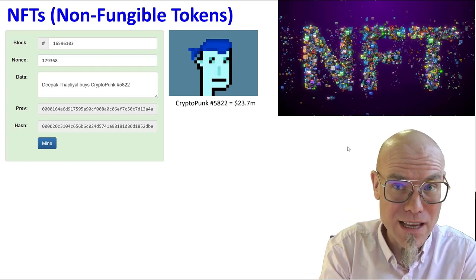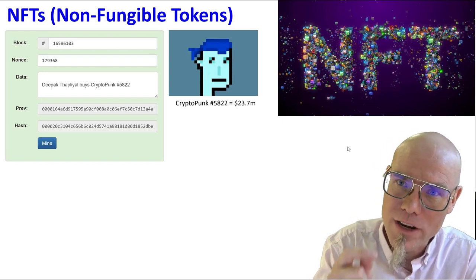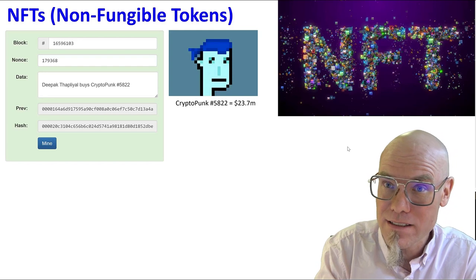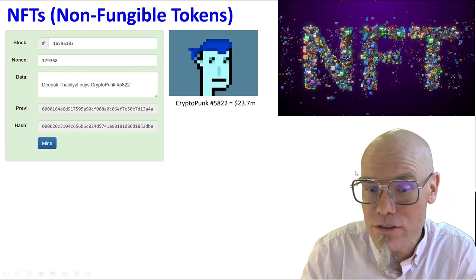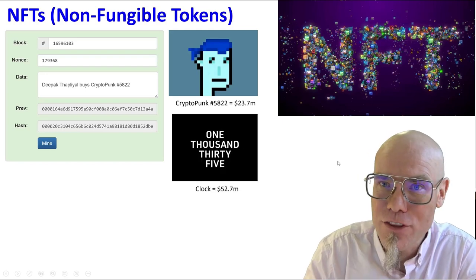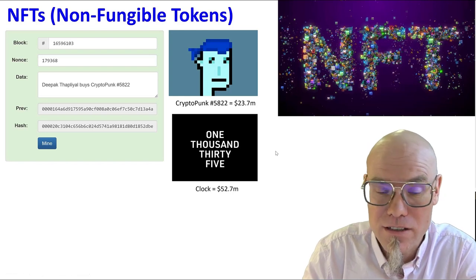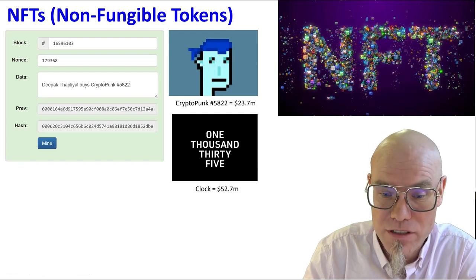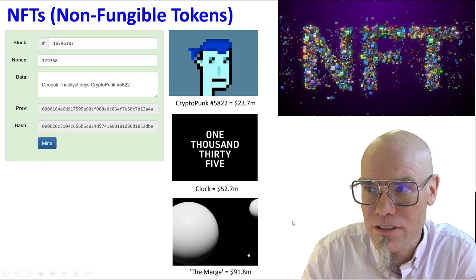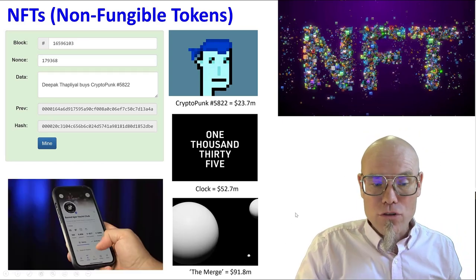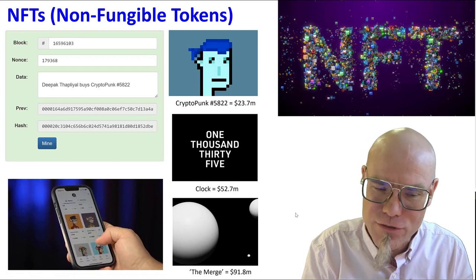Same as Deepak owns this picture even though I copied it and put it on my slide deck. When push comes to shove and somebody asks who owns it, we look on the blockchain, and the blockchain registers who has the property. There are many other art pieces — for example, this clock counts how long Julian Assange, the WikiLeaks founder, has been in prison; it sold for over 50 million dollars.